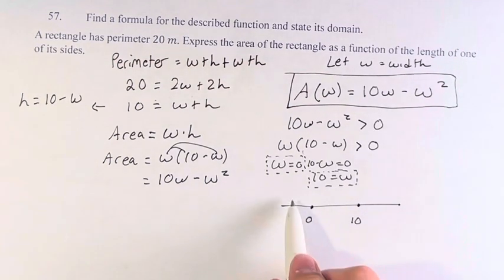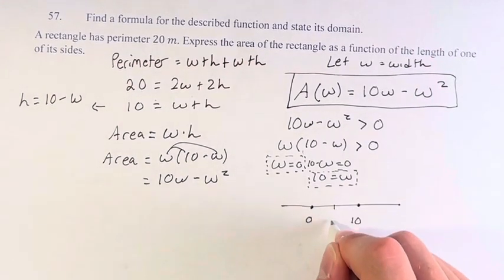We have to find on these ranges relative to these points, is it positive or is it negative? So let's plug in this point. Let's say 5.